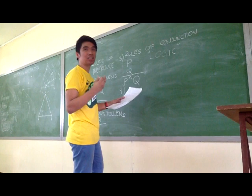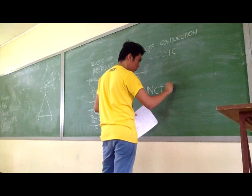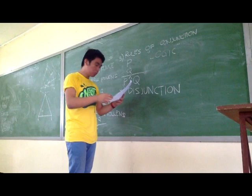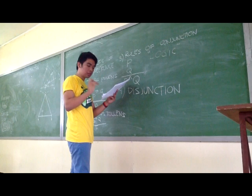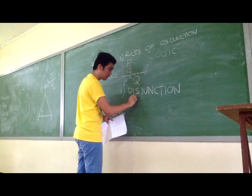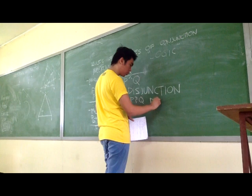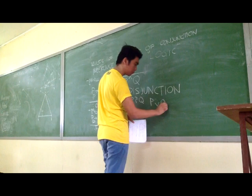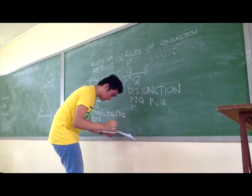Disjunction is the opposite of conjunction. Proposition of P and Q, denoted by P or Q. So my example here is P — because disjunction is the opposite of conjunction, it is denoted as P or Q.